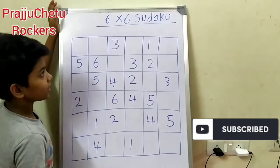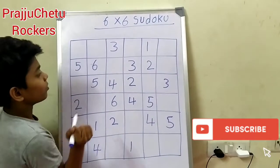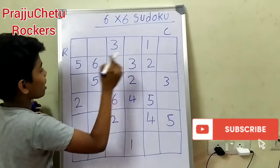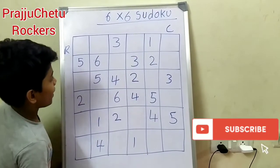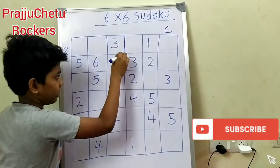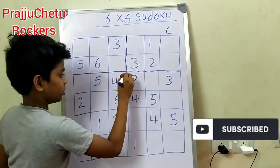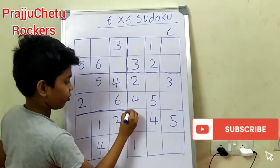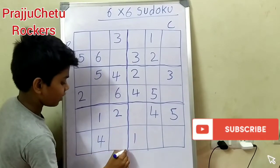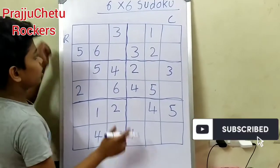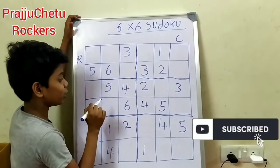There are some rules in this Sudoku puzzle. There are columns and rows, and one number shouldn't repeat two times in columns and rows. And there are houses — this is one house, this is the second house, this is the third house, this is the fourth house, this is the fifth house, and this is the sixth house. One number shouldn't repeat two times in each house.